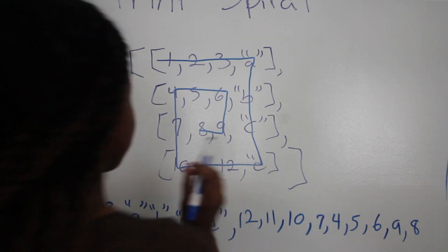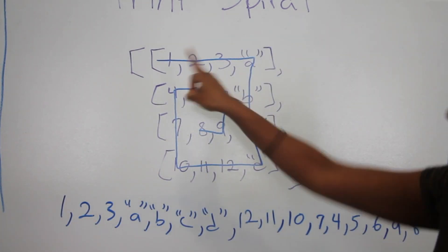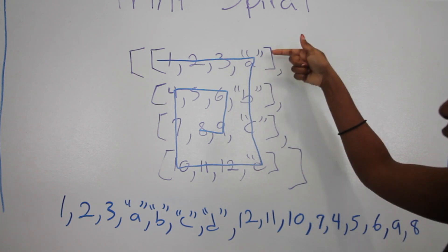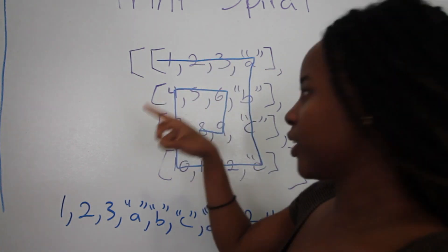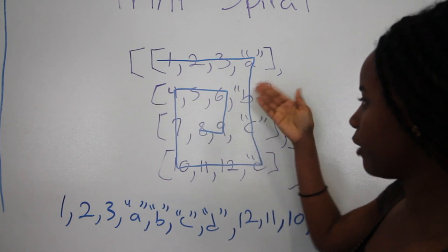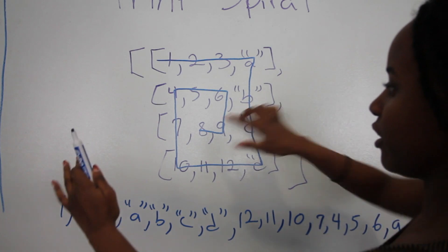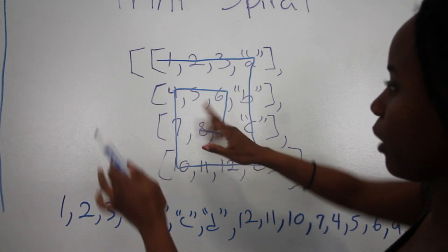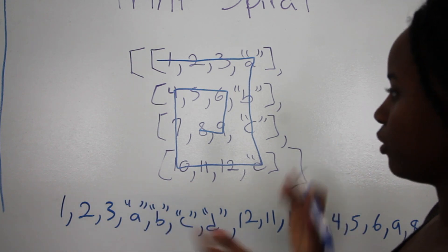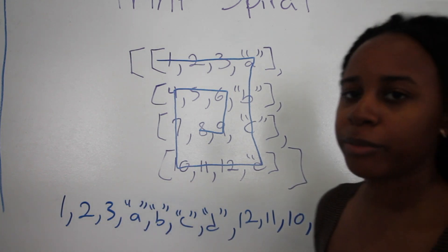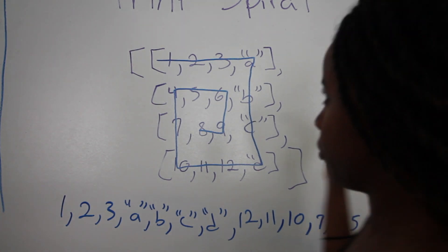So essentially we're doing four major steps: we're moving to the right, then we're moving down, we're moving backwards, and we're moving up — and we're going to keep repeating that. We're going to move right, move down, move backwards, and if this were bigger, after we move backwards it would go up. We're going to start with this example, and it's gotten pretty big.